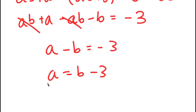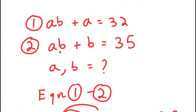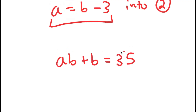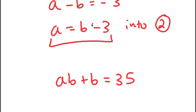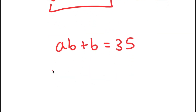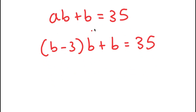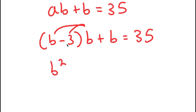Now what I can do is substitute this value of A into equation number two. Equation number two is AB plus B equals 35. Now that I've got a value of A in terms of B, I can plug this in. So now I get (B minus three) times B plus B is equal to 35, and now my only variable in this equation is B.